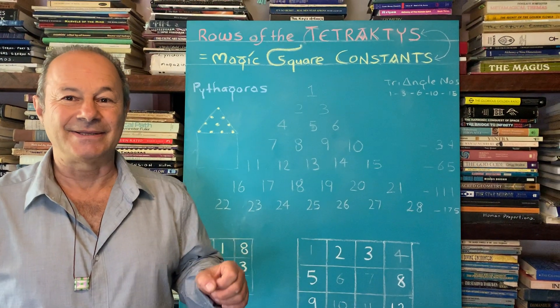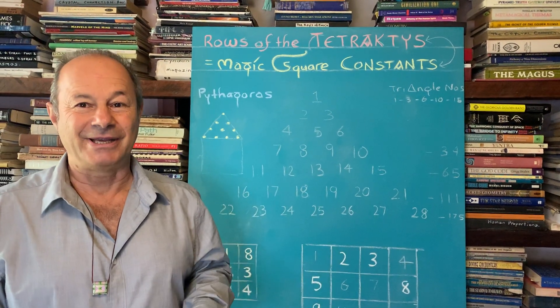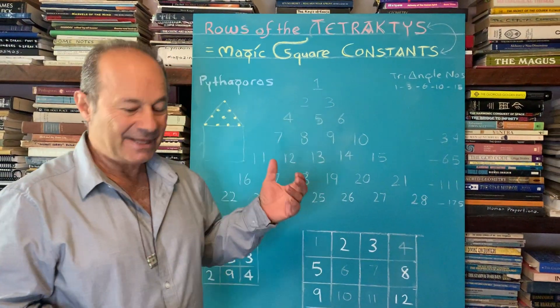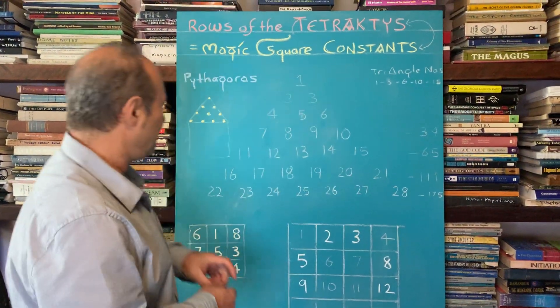Today I have an amazing lesson that connects the ancient Pythagorean teachings to magic squares and it's a thing that they revered called the Tetraktys.